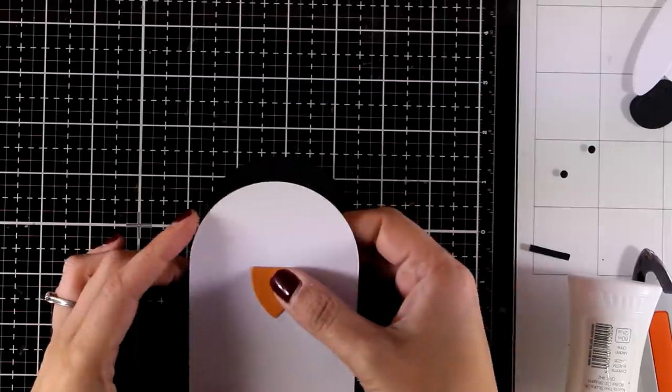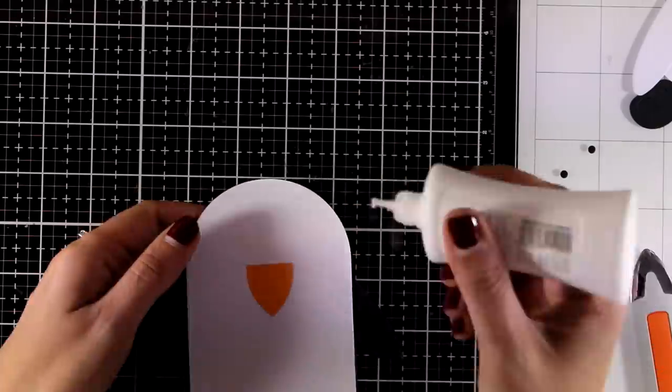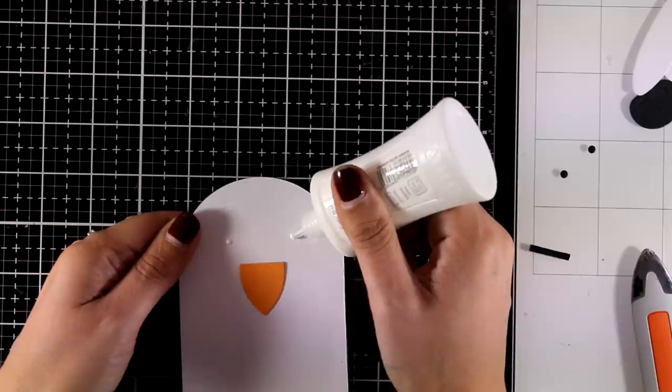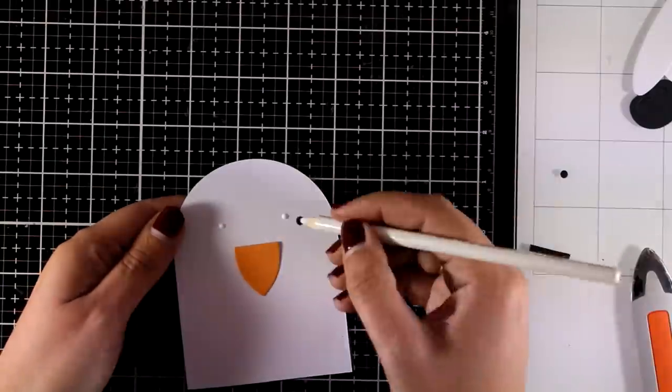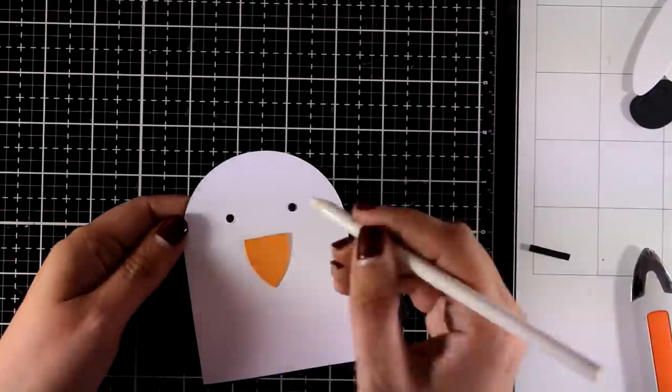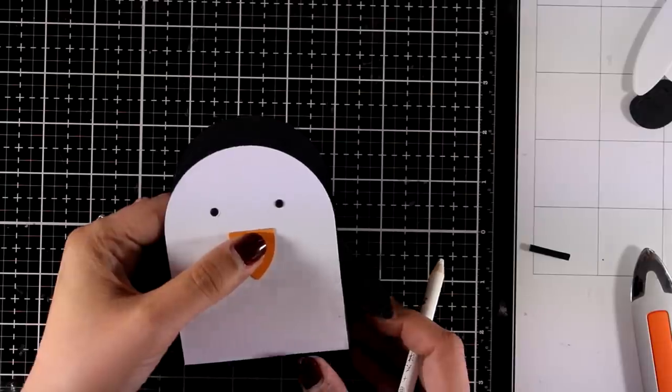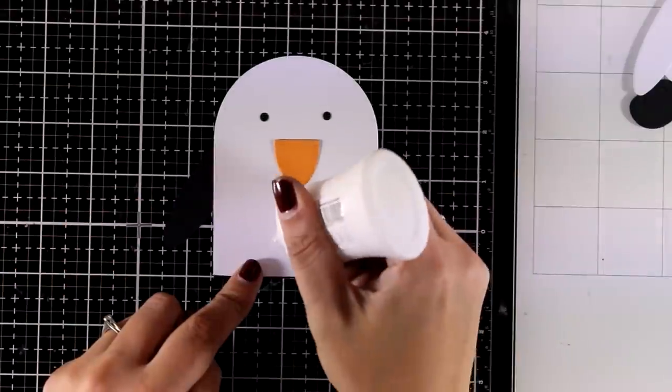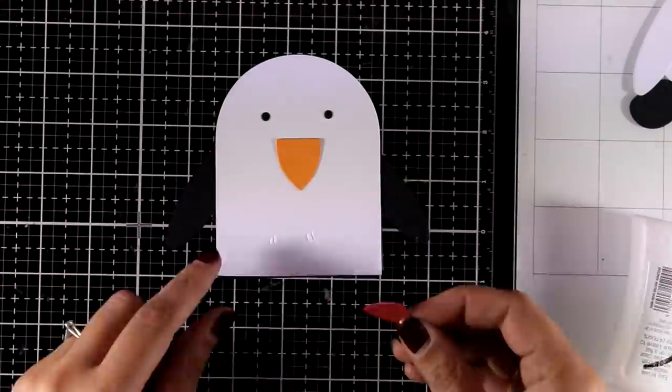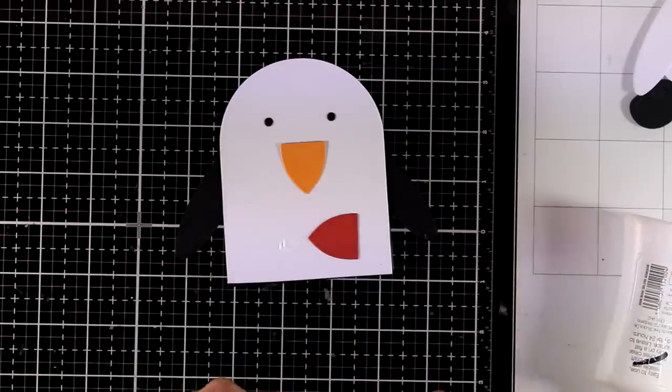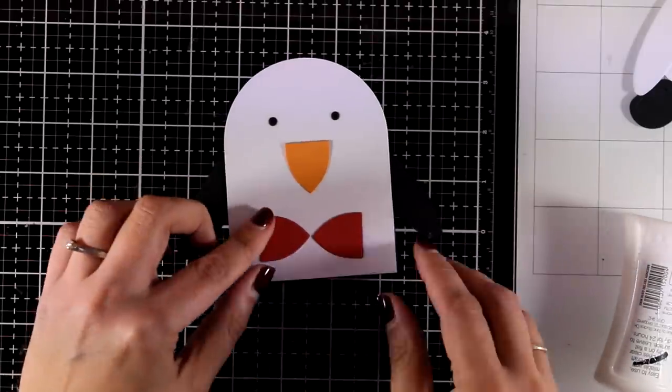I also used orange cardstock and that was the ear in the previous animal. This time it's going to be the beak. I also cut out a couple of eyes which I'm going to stick down and my penguin is ready. If you want to take it a step further you can cut out that shape that is now a beak out of red cardstock like I did and create a little bow for your penguin.